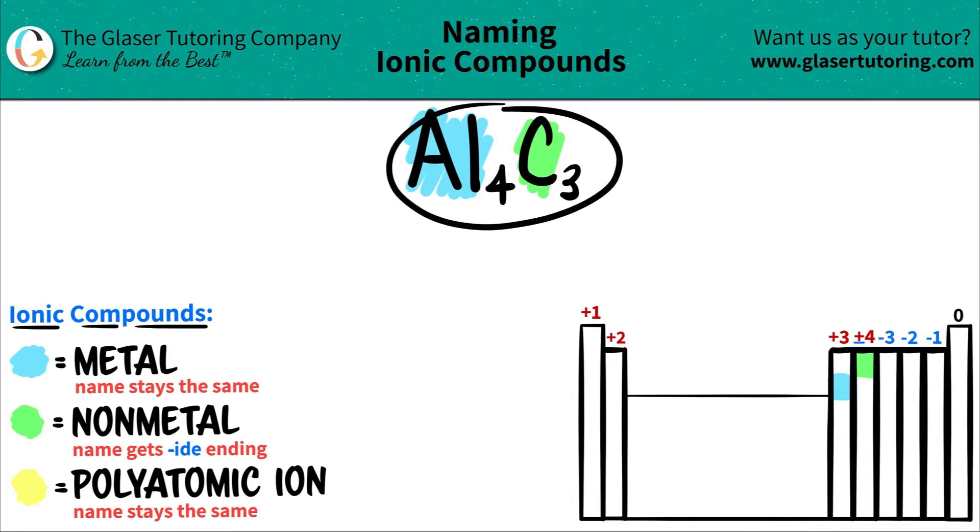Now we have identified what they are. Let's name them. The metal name always stays the same. Aluminum is aluminum on the periodic table, so I'm just going to write aluminum.